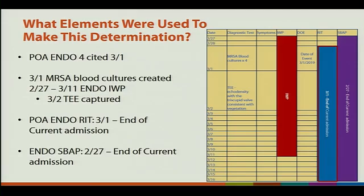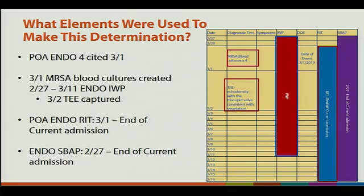Here's quickly why. A POA endo-4 was cited on 3-1 with MRSA blood cultures times 4, creating an IWP of 2/27 to 3/11. The 3-2 TEE is captured in that IWP. The POA endo RIT is 3-1 until the end of the admission, and the SBAP is 2/27 to the end of the current admission.